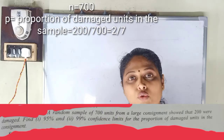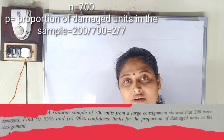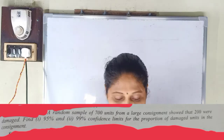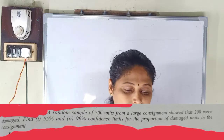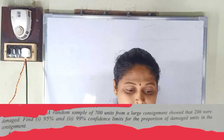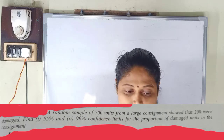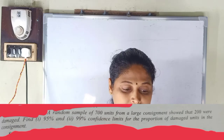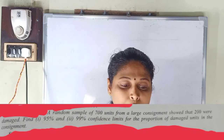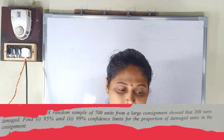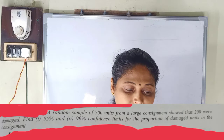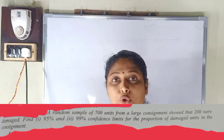Proportionally, out of 700 units, 200 were damaged — that is the proportion. We need 95% confidence limits, and also 99% confidence limits for the proportion of damaged units in the consignment. This is the formula for proportion.